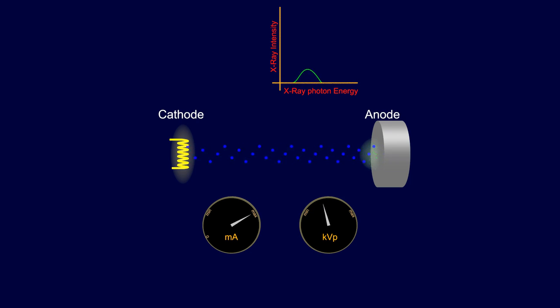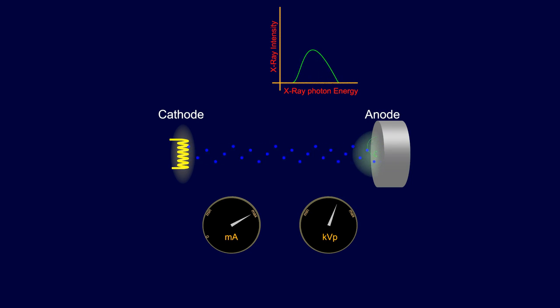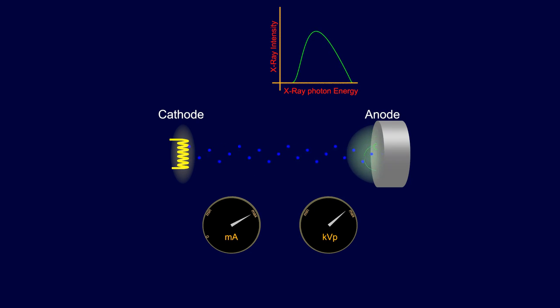As the KVP gradually increases, the speed at which the electrons travel also increases. The graph shows that the increase in KVP increases the intensity and energy of the X-ray beam.